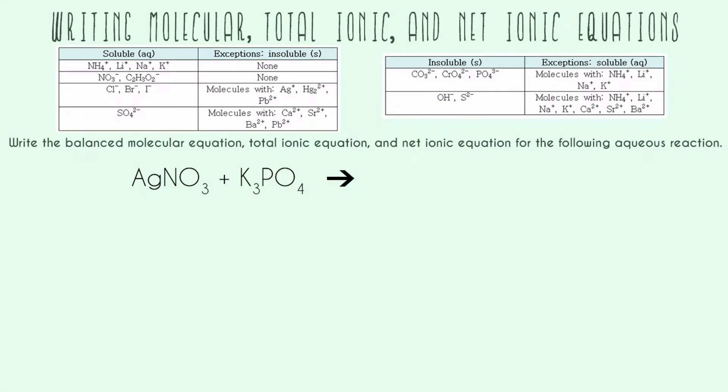In this video, I'm going to go over how to write molecular, total ionic, and net ionic equations. This type of problem involves combining a bunch of concepts that you learn early on in chemistry, and you have to use all of them to get the answer. For that reason, it can be a little bit tricky at first.